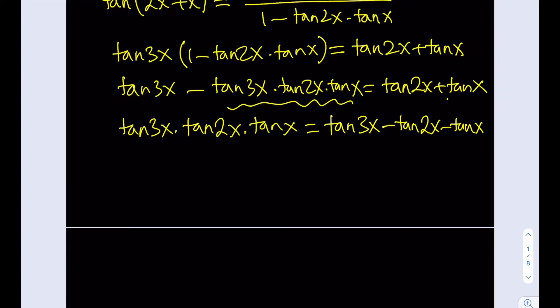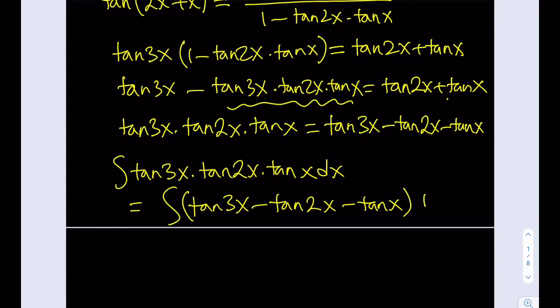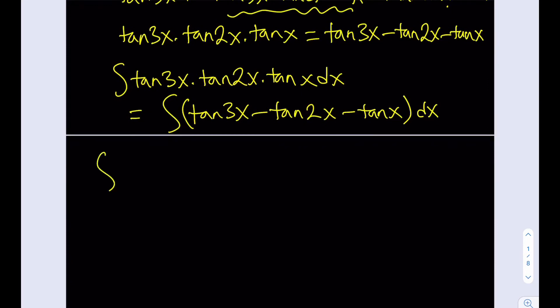I couldn't call it a difference because there are three terms, so I'm going to call it a sum. So integrating both sides basically are going to be the equivalent. The integral of tangent 3x times tangent 2x times tangent x dx is going to be the same thing as the integral of tangent 3x minus tangent 2x minus tangent x. So this is good because now we have a sum and sum is very easy to integrate.